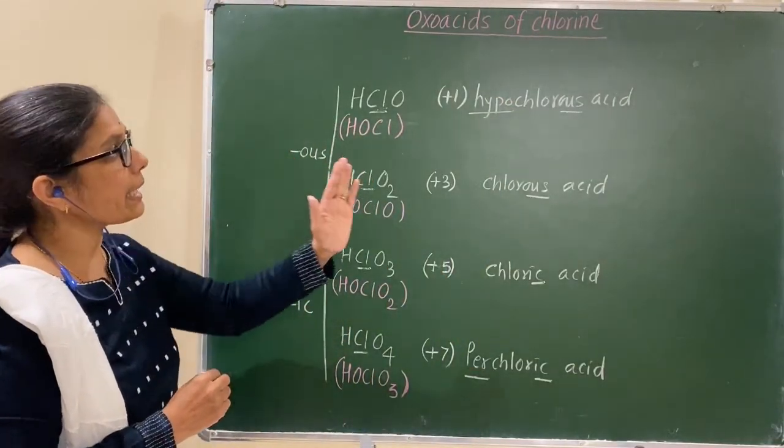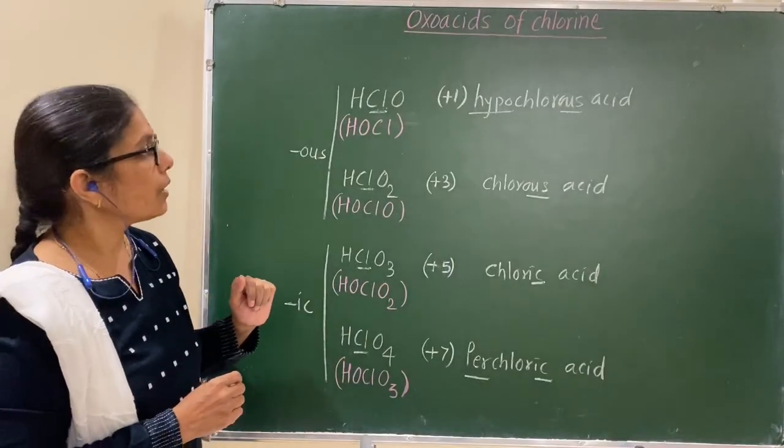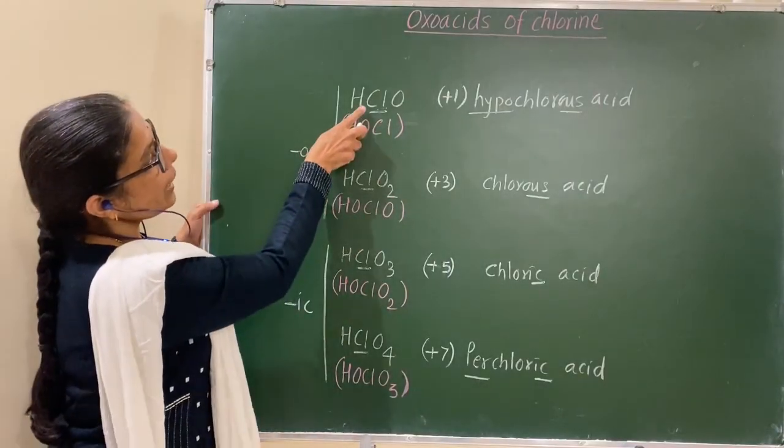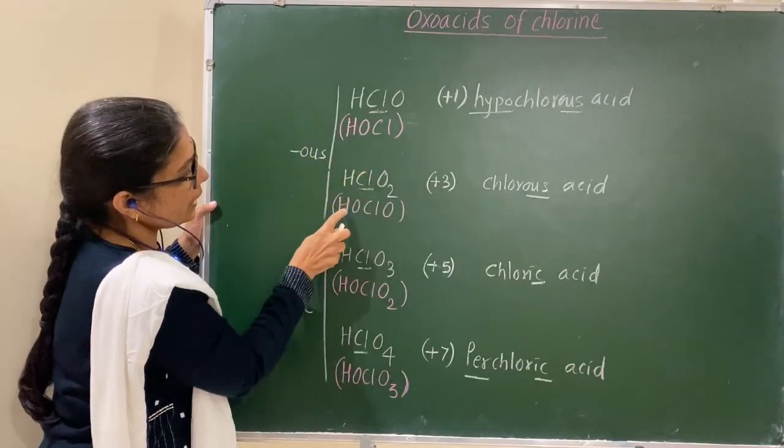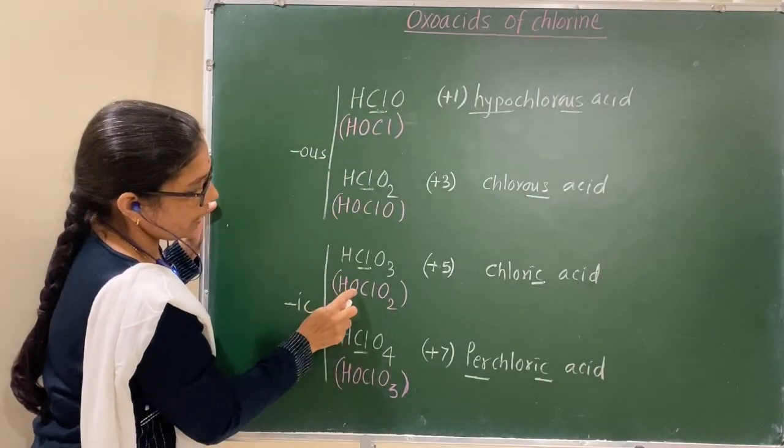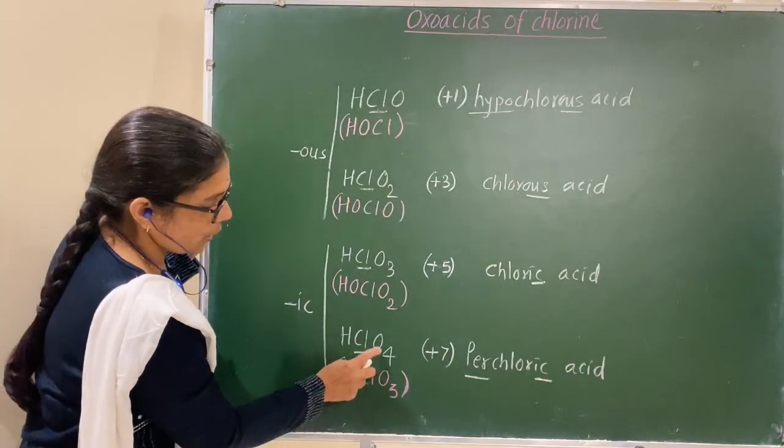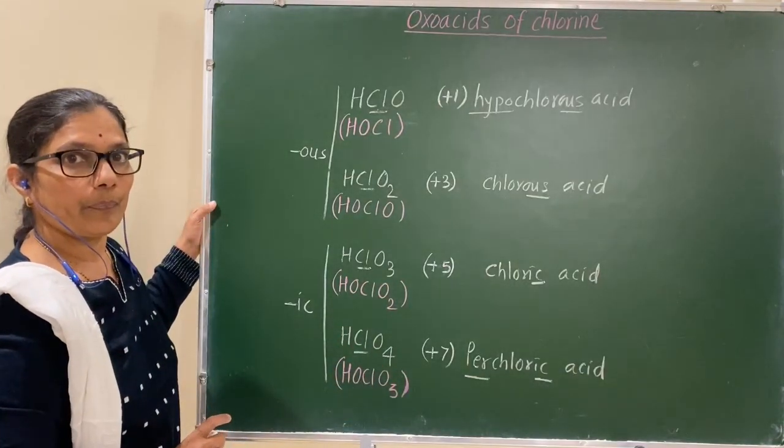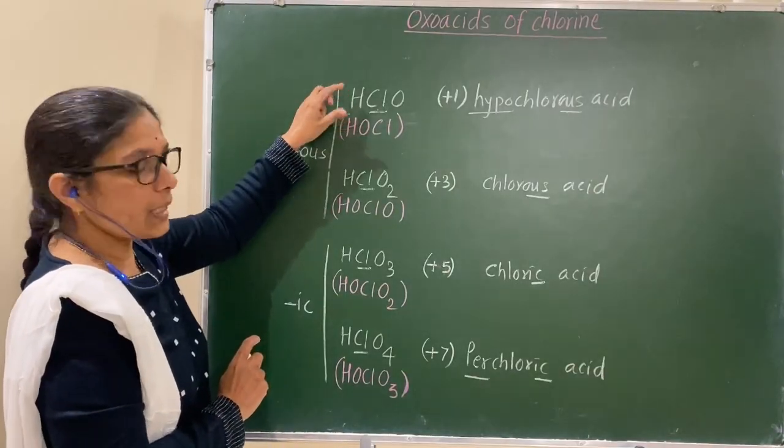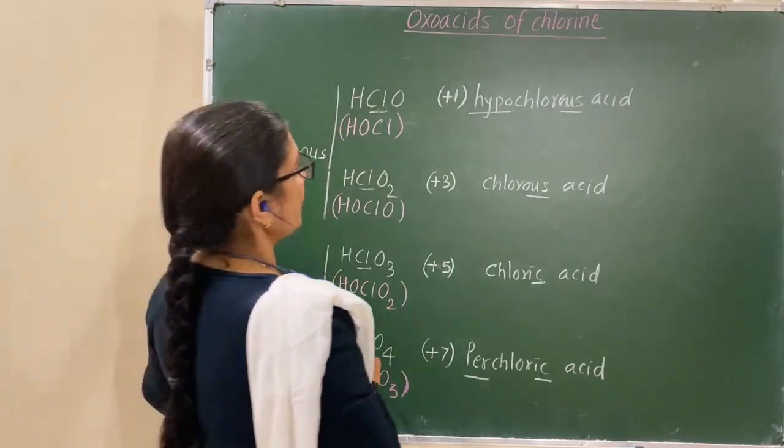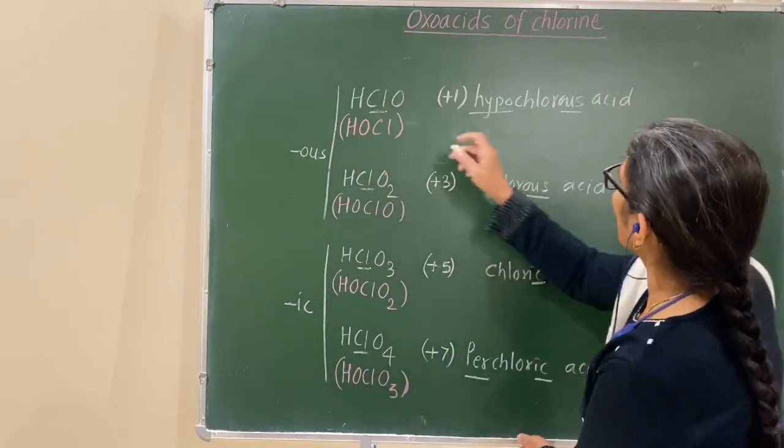Now, let us see their structures. I have written this compound here, HClO, that is HOCl. Here HOClO, here HOClO2, HOClO3. Now, if once you know the structure of this, you can write the structure of the remaining ones. See here, HOCl.